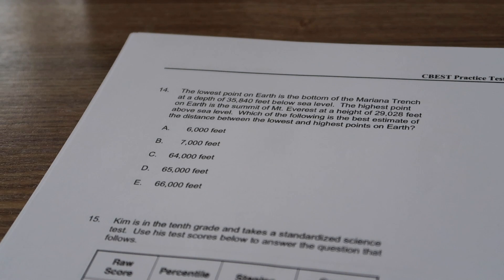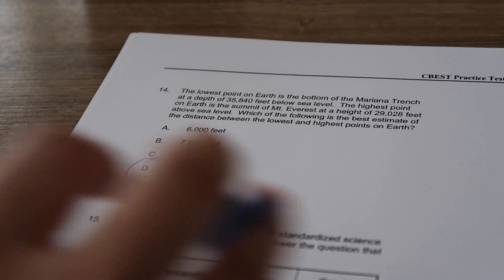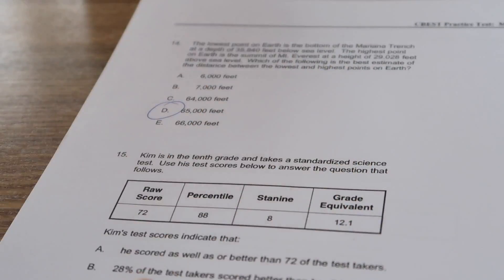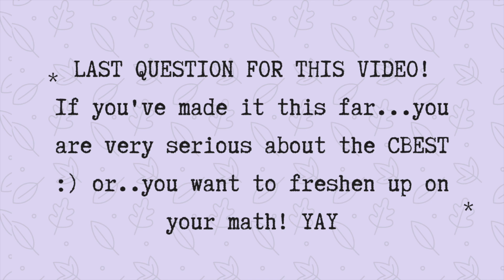The lowest point on earth is the bottom of Mariana Trench at a depth of 35,840 feet below sea level. The highest point on earth is the summit of Mount Everest at a height of 29,028 feet above sea level. Which of the following is the best estimate of the distance between the lowest and the highest point on earth? We're going to add it together, and it should be about 65,000 feet. I just added them together because it's the lowest from sea level to the highest, so you're going to add it together to get the distance.